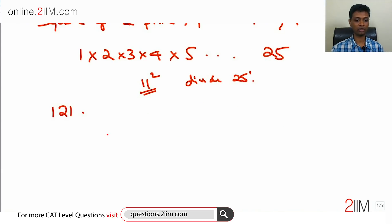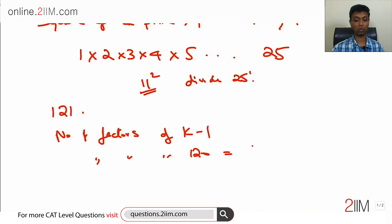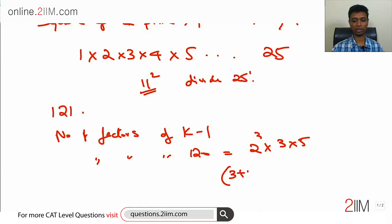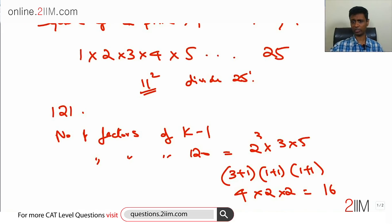We are not done yet. We need to find the number of factors of k minus 1, which is the number of factors of 120. Now 120 can be prime factorized as 2³ × 3 × 5. The number of factors is (3+1)(1+1)(1+1) = 4 × 2 × 2 = 16.